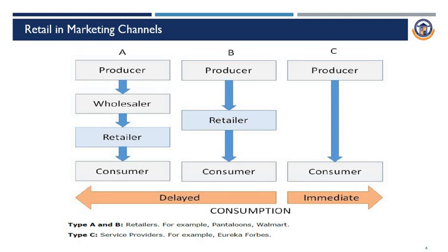We are going to discuss retail marketing channels — how the channel is distributed, how retail products are produced and reach the consumer. Type A and Type B and Type C are represented here. In Type A: producer, wholesaler, retailer, and consumer. This is the process — products are produced, reach the wholesaler, then the retailer, and finally the consumer.